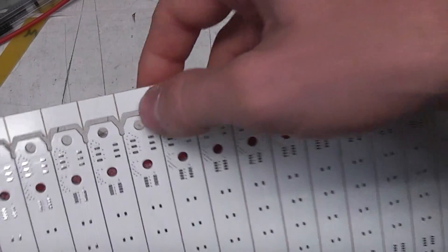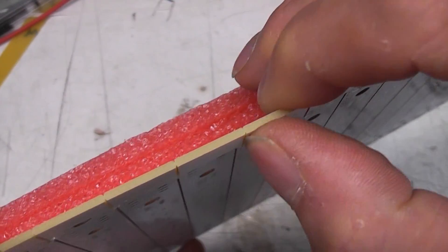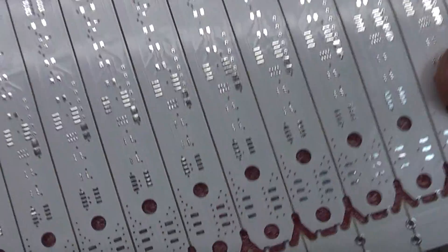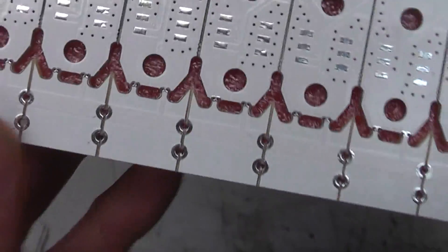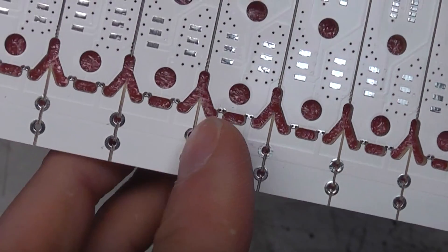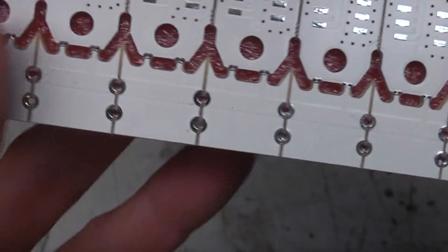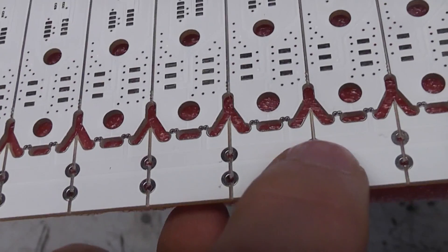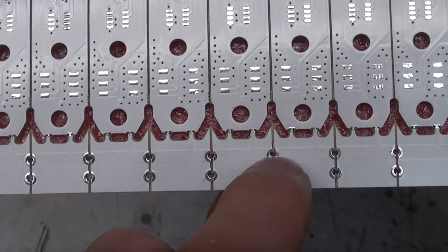Of course the problem with the V-score is it cuts through the surface so you can't easily do that. So how do you do it? Well the answer is you just put some plated through holes on the V-score line. So although the V-score cuts through the surface, there's actually enough plating left in the hole to maintain the connectivity.